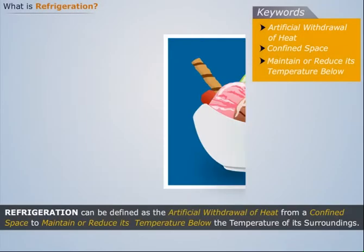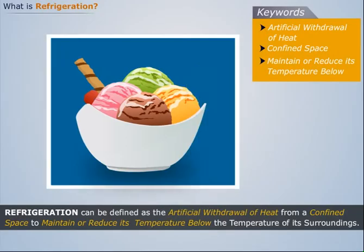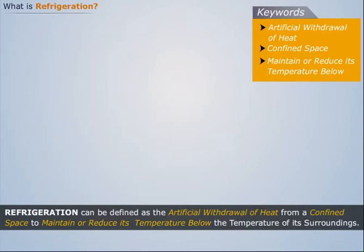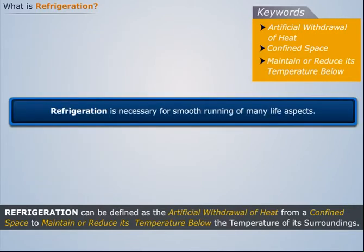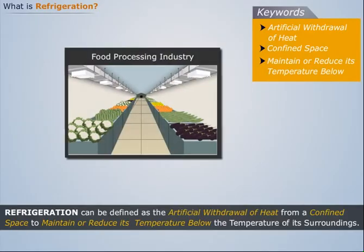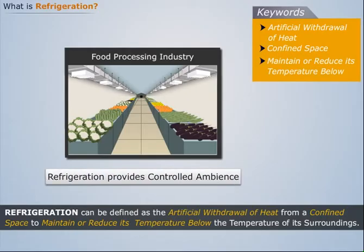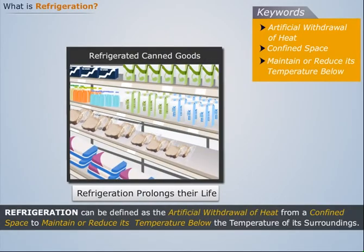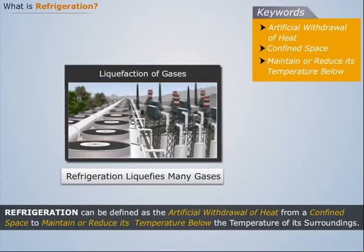But why is refrigeration necessary — is it just so that we can enjoy cold beverages? No, it serves much more than that. Refrigeration is necessary for the smooth running of many life aspects. For example, large food processing industries require refrigeration to provide a controlled ambience to food and prevent it from decaying. Similarly, canned goods need to be refrigerated for their prolonged life. It is also used to liquefy many gases such as oxygen, nitrogen, propane, etc.